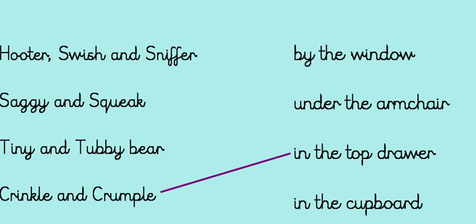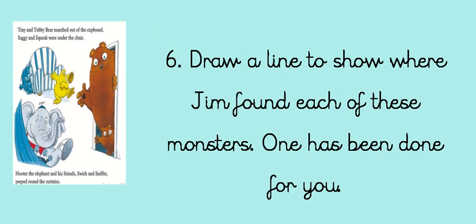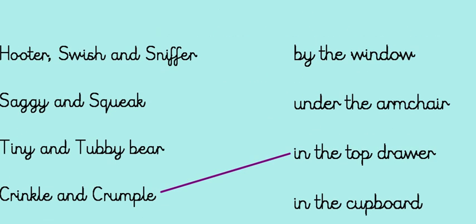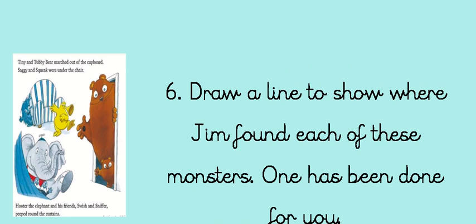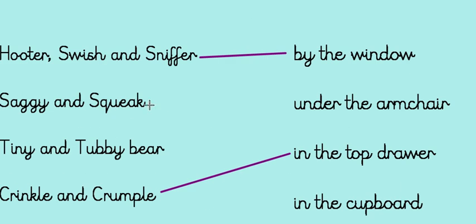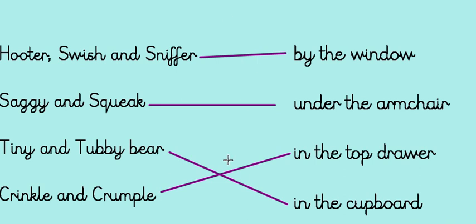So, Hooter, Swish and Sniffer — where were they found? Let's go and have a look. They were found behind the curtain. Now, there's not one that says behind the curtain. Which one might be right? By the window, because that's where we have curtains in our houses, isn't it? By windows, you're right. That was a really tricky one. Saggy and Squeak — where were they? They were under the chair, weren't they? Under the armchair. Well done. And Tiny and Tubby Bear were in the cupboard. Well done if you got those right. If not, don't worry. Just give me a look at what you did and I'll help you. Well done, everybody. See you tomorrow.